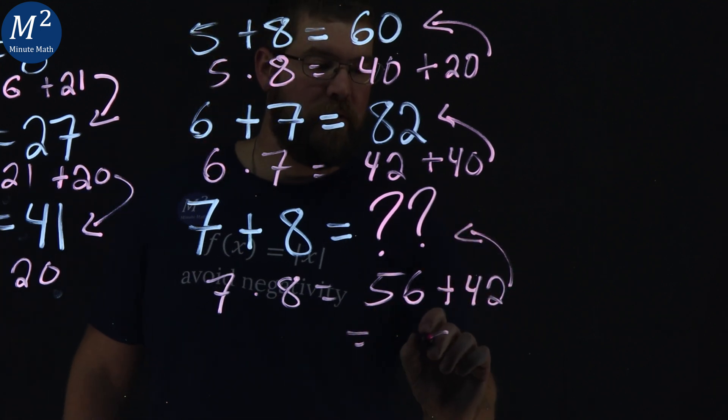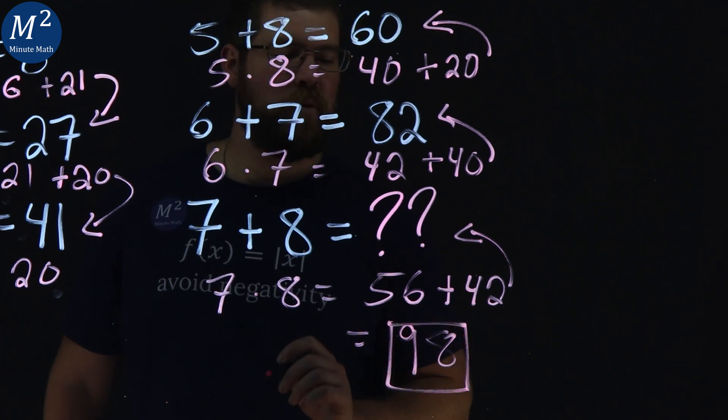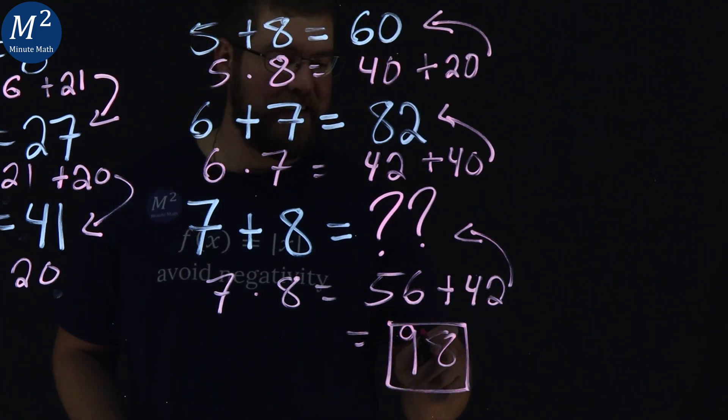56 plus 42 is 8, 9. Squeaky markers tell us it's 98.